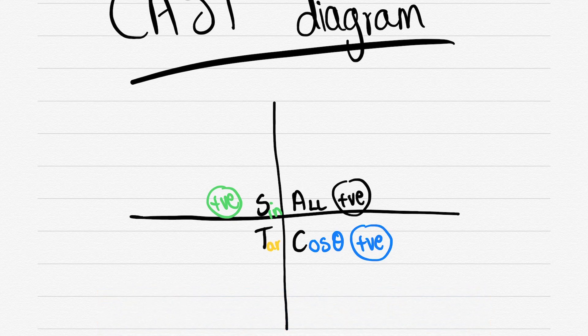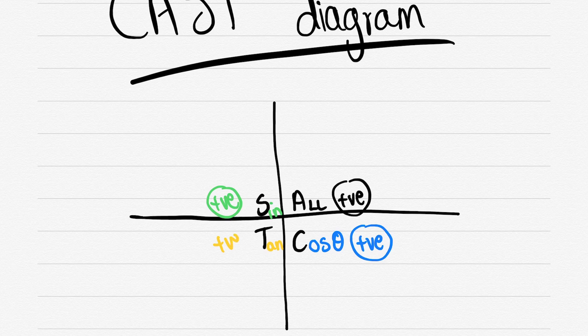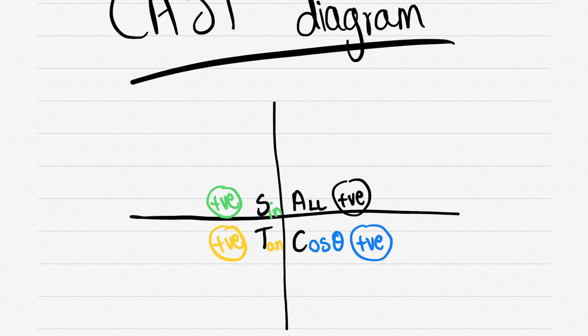So you get first top right, second top left, third bottom left and fourth bottom right. So if ever the test is referring to a particular number sort of quadrant wise, you'll know exactly which one to look at.